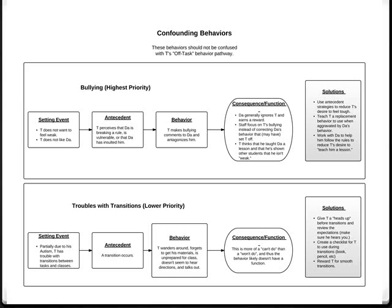Here are some more confounding behaviors. The bullying one, interestingly, was fixed with an antecedent strategy of letting him work with peers — he just wanted to be able to teach students who didn't know how to do something well, so he would bully. The transition behavior is interesting because that was more of a 'can't do' than a 'won't do,' so you'll notice we had a different strategy for dealing with that.